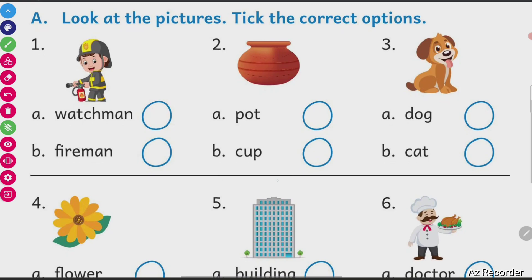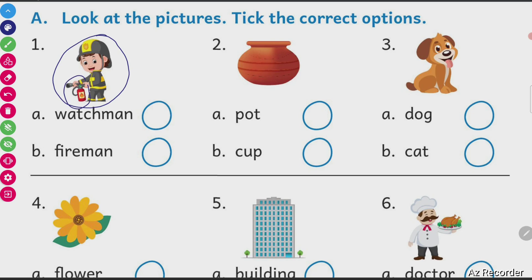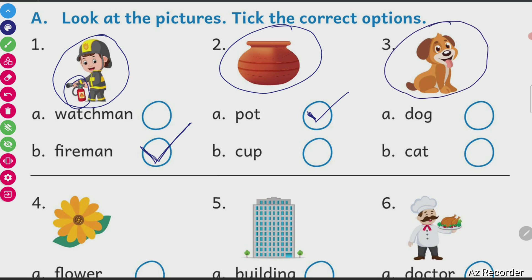This is your assignment. Look at the picture and help me choose the right option. In the first picture, what is the common name used for a person in uniform with a fire extinguisher? He is a watchman or a fireman? He is having a fire extinguisher in his hand, so he is a fireman. The common name for this person is fireman. This thing is a pot. The common name for this animal is a dog.